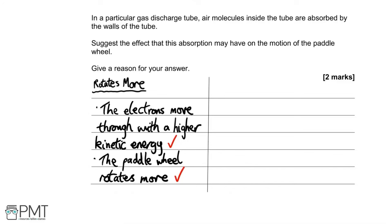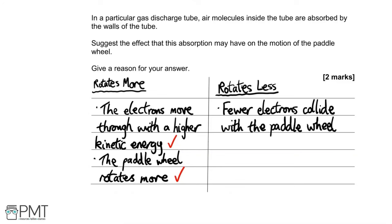For the paddle wheel rotating less: there would be fewer electrons to collide with the paddle wheel, so the wheel would rotate less. Whether you write that the wheel rotates more or less, you will get two marks, as both answers are accepted.